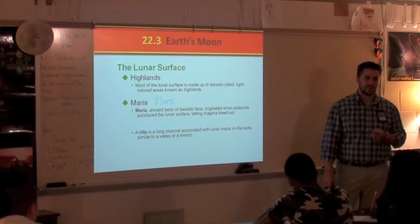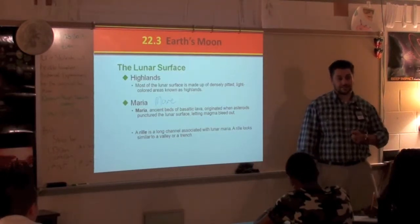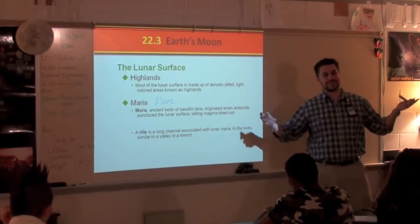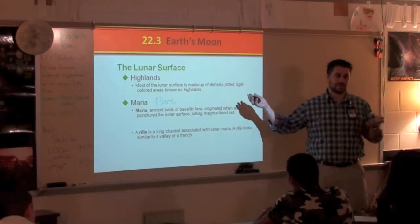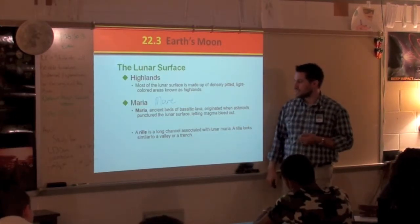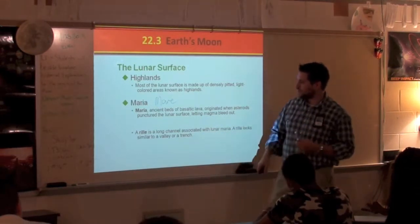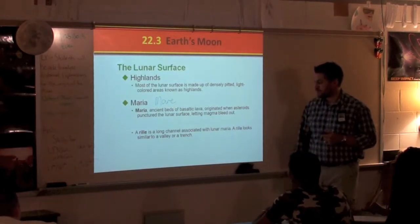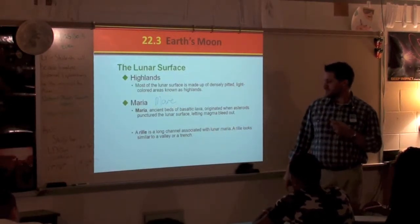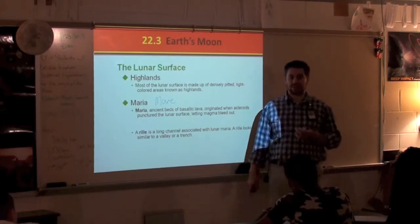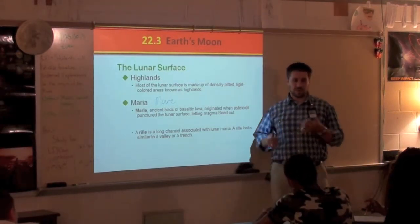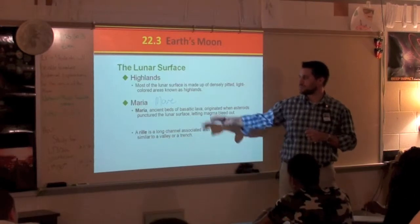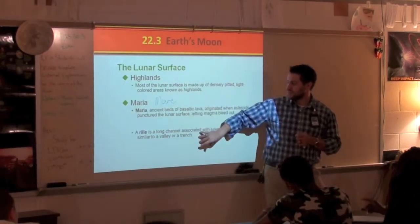A student asks about the name 'tranquility' — somebody named it that; it's tranquil, peaceful, it's nice — it's the moon, so we name it something. Then there are rilles, R-I-L-L-E — long channels associated with lunar maria. A rille looks similar to a valley or a trench. On the moon we don't think they were formed by water — we think they formed from when things were settling. So the moon's main features are craters, highlands, maria, and rilles.